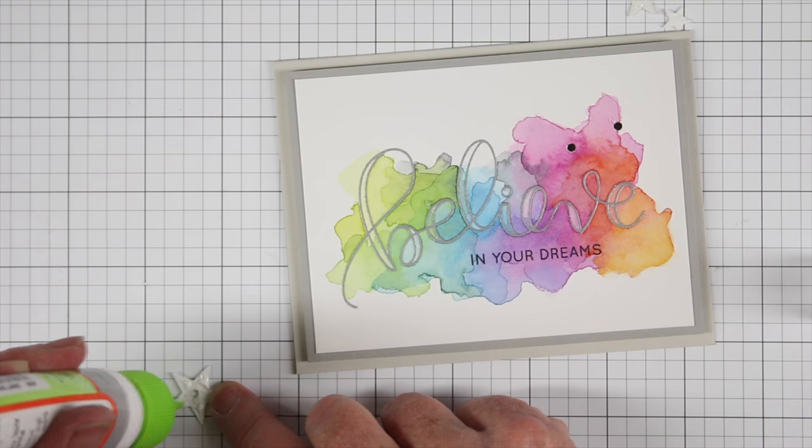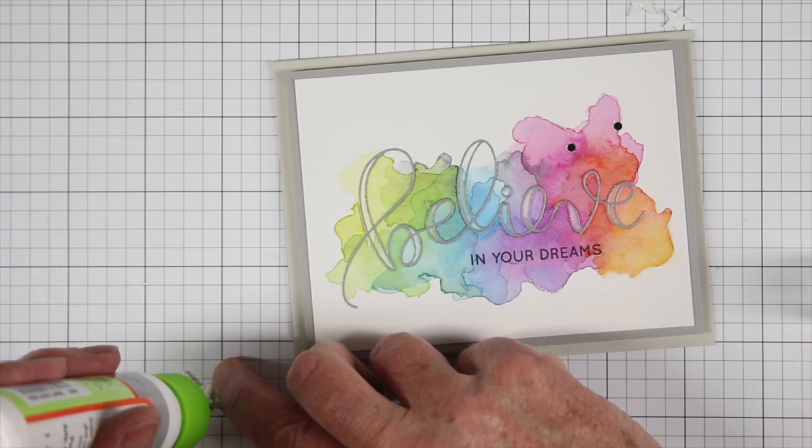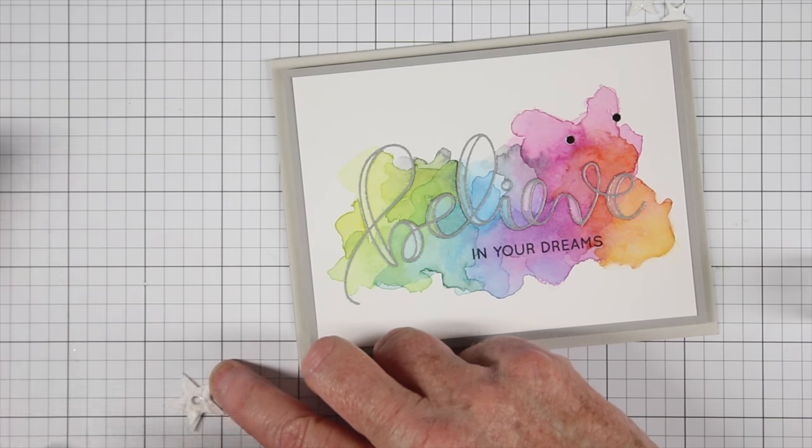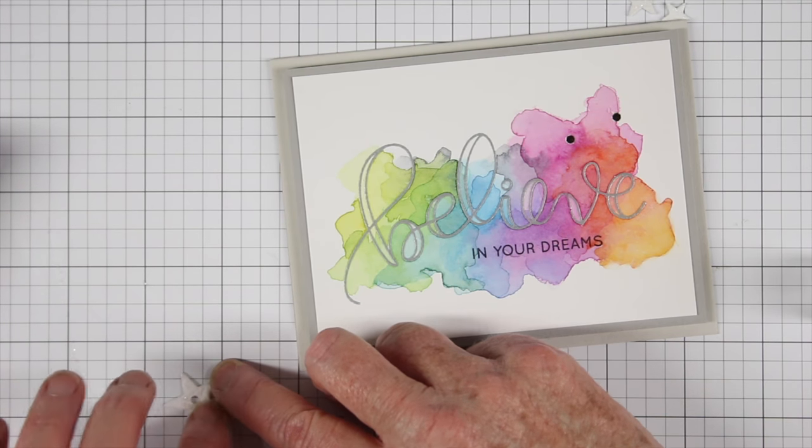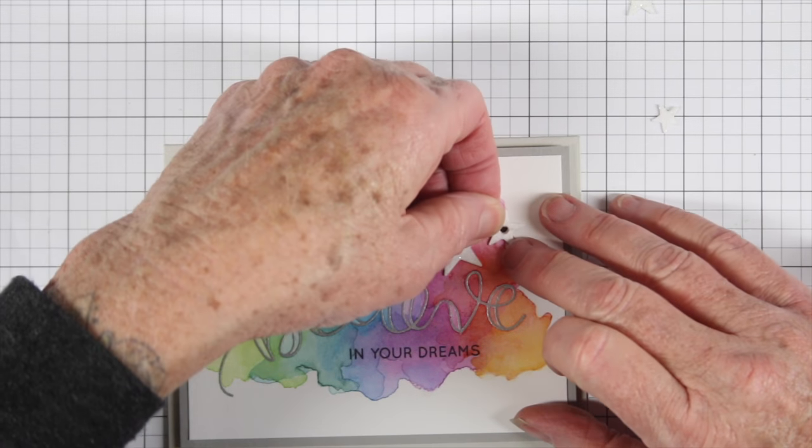So I'm going to add a little bit of glue to the back of those and wipe it off. I don't want any of the glue to go down into the hole so I'm just kind of wiping that off with my finger and then I can put those down in place.